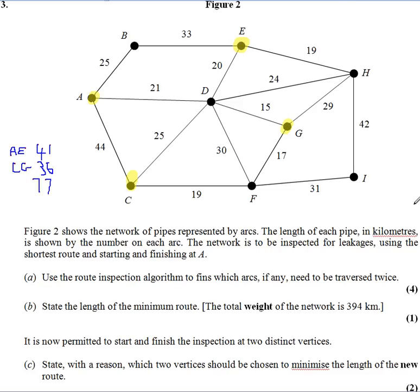I'll show you graphically what's happening here. We're adding extra routes. We're going to go along that route twice and that route twice. Notice now, A and E are now even. D was even to start with and we've gone in and out. So it's still even. Now C and G, we've got to do the same sort of thing, this time through F. So adding those routes adds 77 to the total.